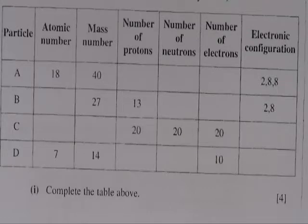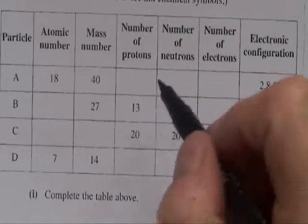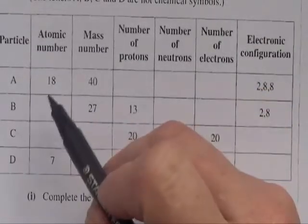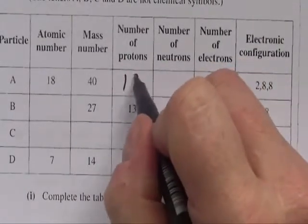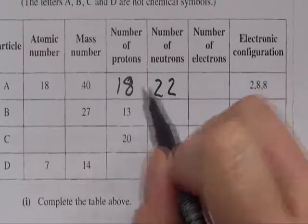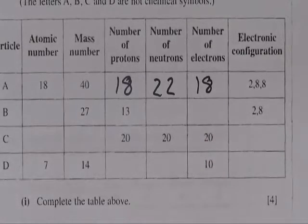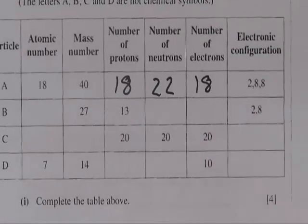The first question is really very simple — make sure you have your periodic table. We've got to work out the numbers of protons, neutrons, and electrons in each of A, B, C, and D, and maybe assign atomic and mass numbers if those gaps are empty. First one: number of protons equals atomic number, so that must be 18. Number of neutrons is mass number minus atomic number — which is 22. No charge, so protons and electrons are the same, and the electron configuration is 2,8,8.